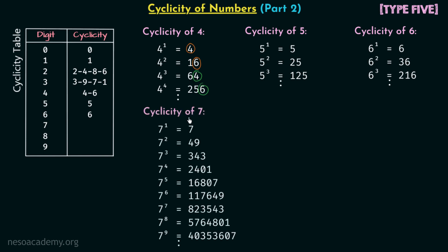Now it's time to find out the cyclicity of digit 7. We have calculated the powers of 7 and will focus on the digits at the unit place to find the repeating pattern. We have 7, then 9, then 3, then 1, and again we are having 7 — so after 4 intervals we get the repetition: 7, 9, 3, 1.